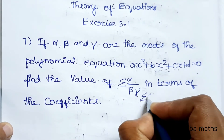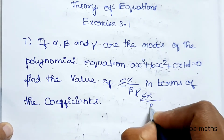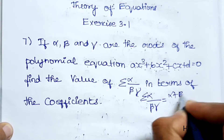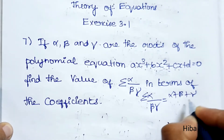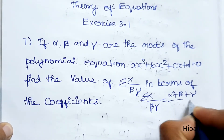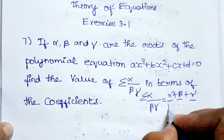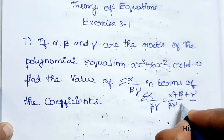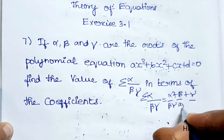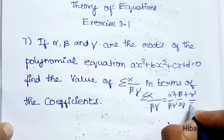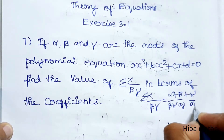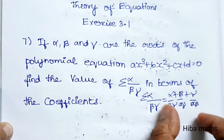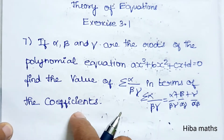The summation of alpha divided by beta·gamma expands to: alpha over beta·gamma, plus beta over alpha·gamma, plus gamma over alpha·beta. This can be rewritten as alpha plus beta plus gamma, divided by beta·gamma, alpha·gamma, and alpha·beta respectively.